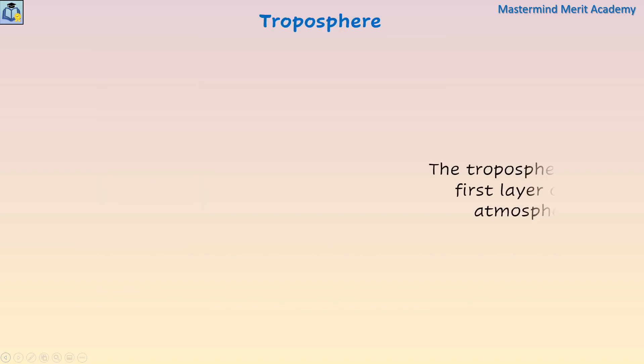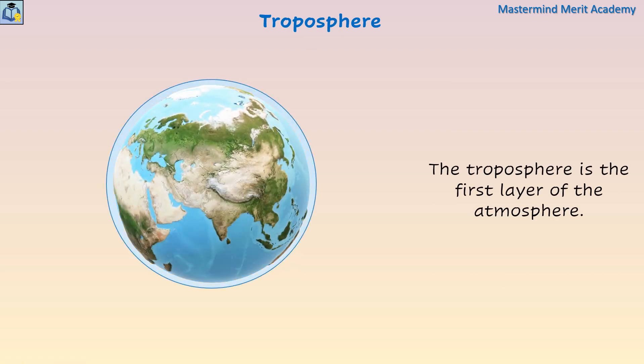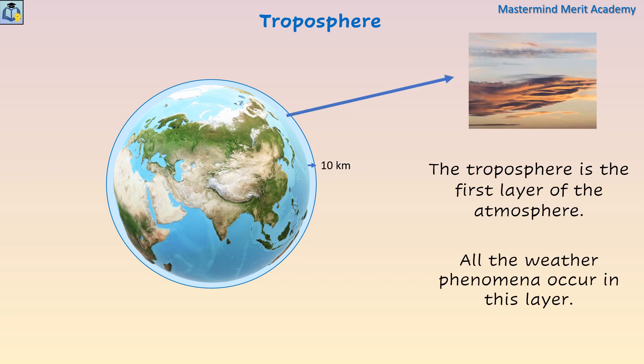The troposphere is the first layer of the atmosphere. Starting at ground level, it extends upward to about 10 kilometers above sea level. All the weather phenomena occur in this layer. Most clouds appear here as 99% of the water vapor in the atmosphere is found in this layer.